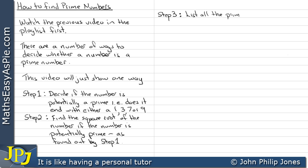Step 3. List all the prime numbers below the square root found at step 2.